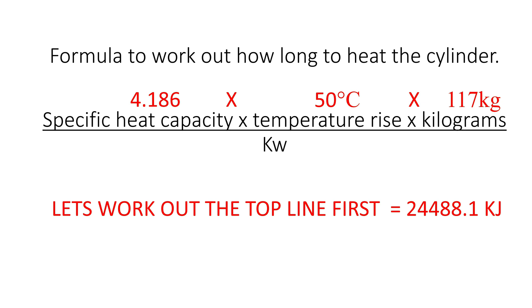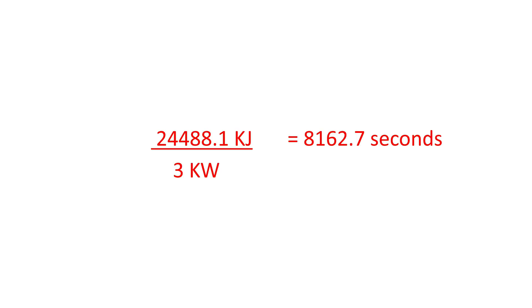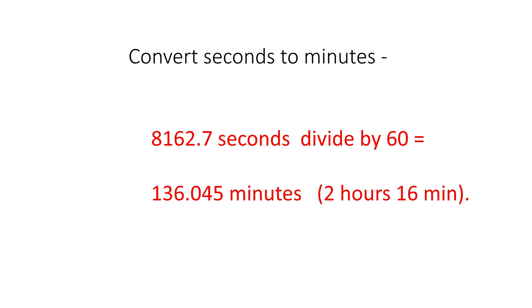We need 24,488.1 kilojoules of heat. We can now divide this by three kilowatts — the immersion heater size — and this will give us 8,162.7 seconds. If we then divide this by 60, this will give us 136.045 minutes, so the heat recovery time is 2 hours 16 minutes.